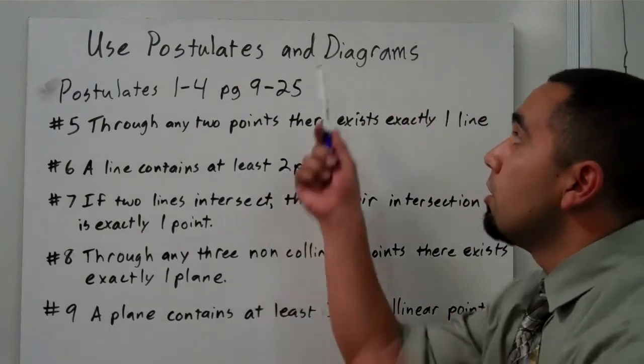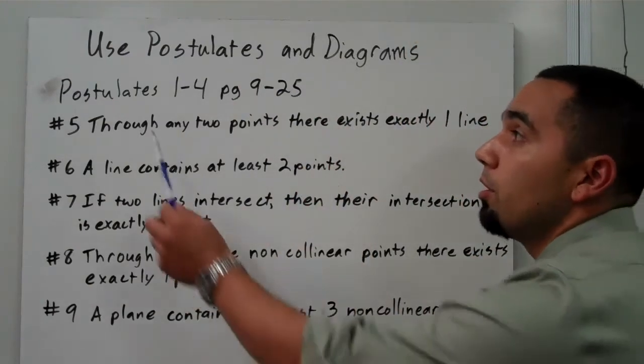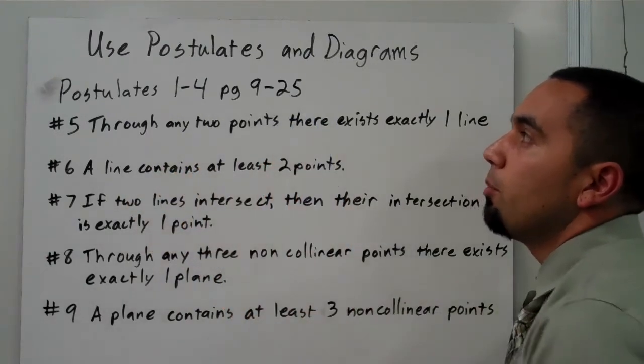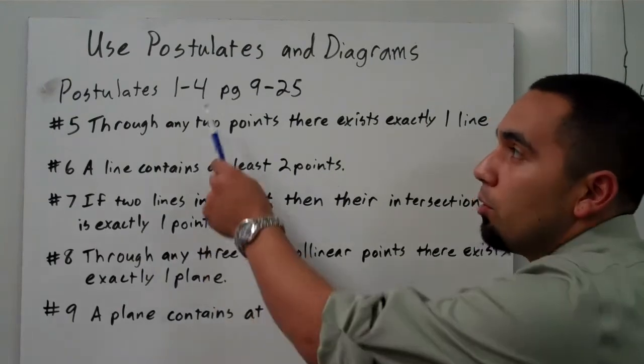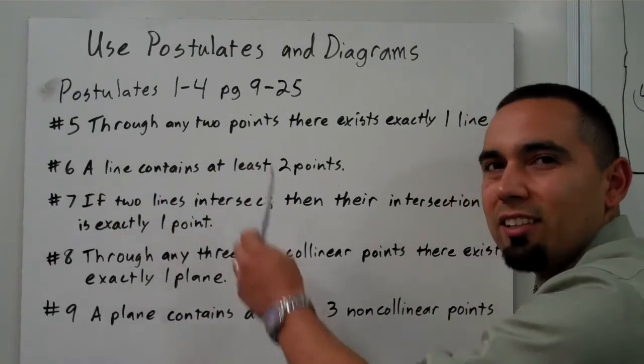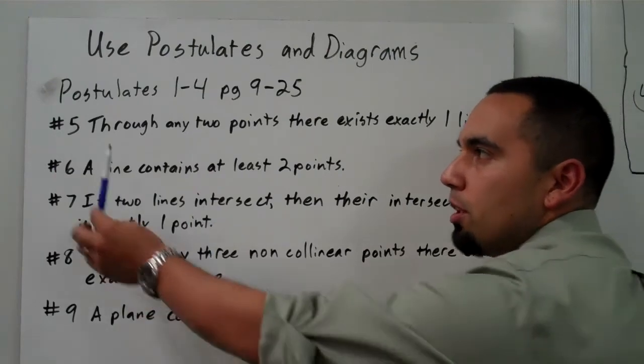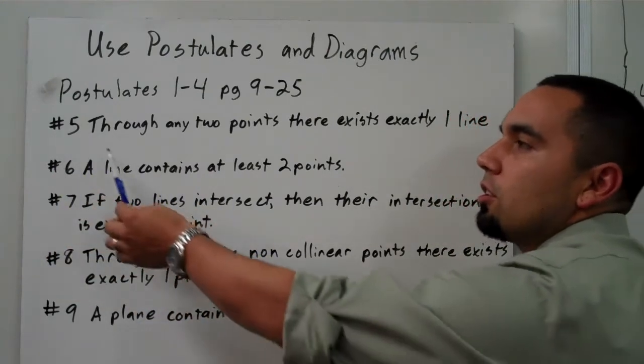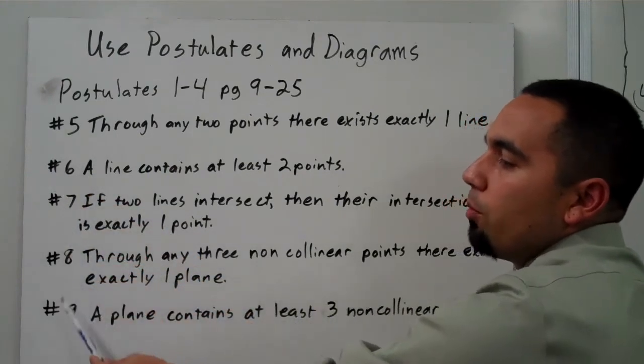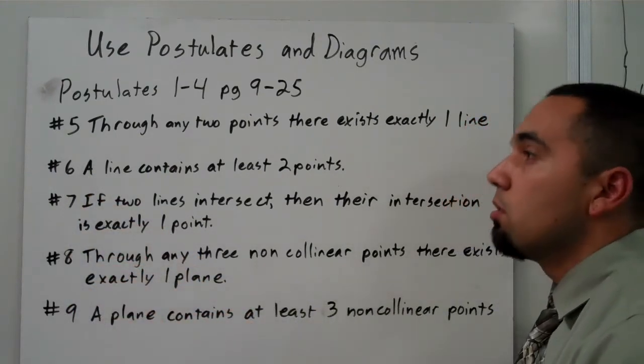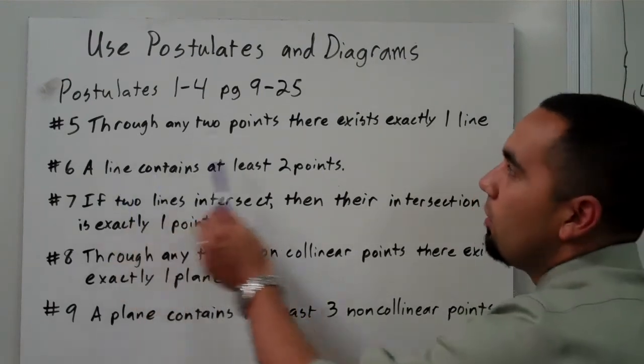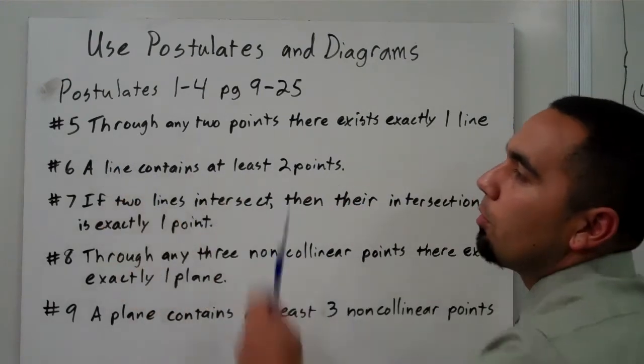Okay, so use postulates and diagrams. We learned a few postulates back in Chapter 1. Those would be on pages 9 through 25, that's numbers 1 through 4. This is just how the book numbers them. These aren't exactly, you know, there's no geometry number 5 postulate, it's just how the book numbers them. But you can use these numbers when you're identifying them in your answers. So that's what makes them helpful. So I am going to ask you to write all of these down, but let's start with number 5.